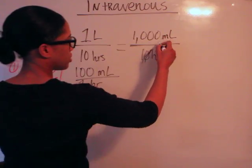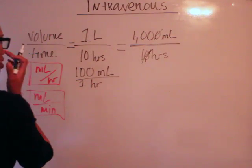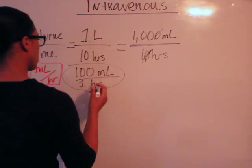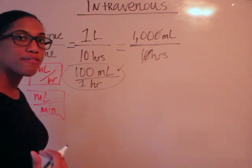Here's a little shortcut. You can cross out your zero, cross out your zero, 100 per one. So that will be 100 milliliters per one hour. That's the answer to that portion of the question. But now we have a second portion that wants us to go even further.